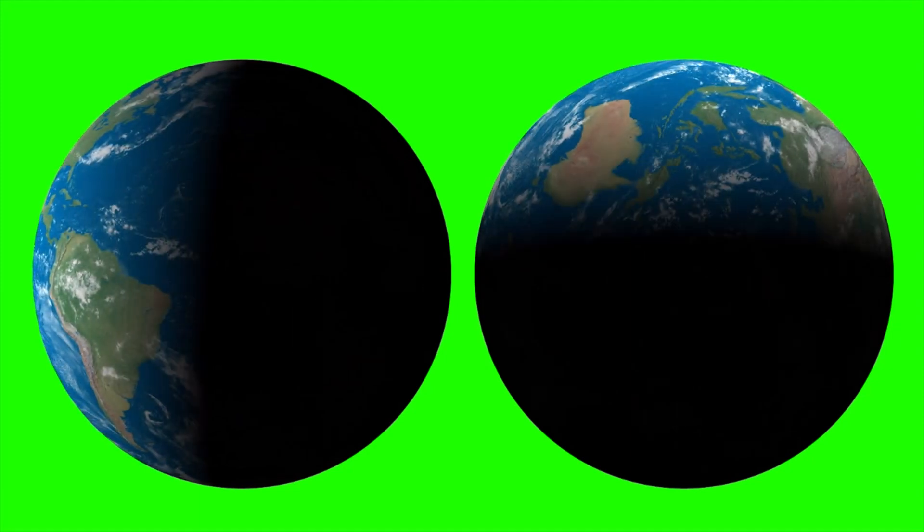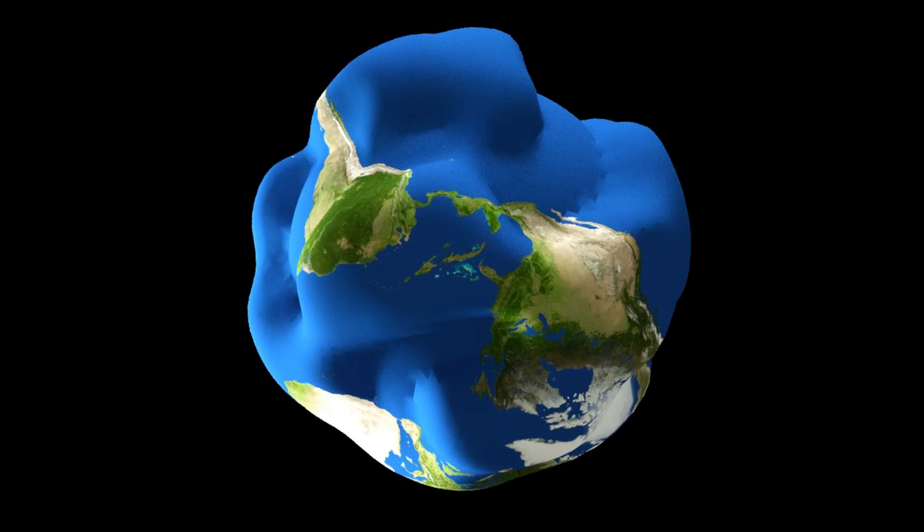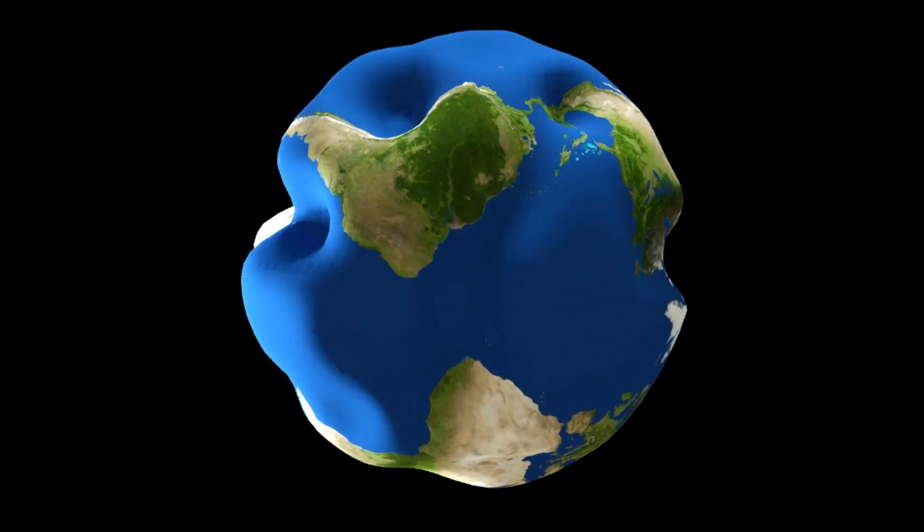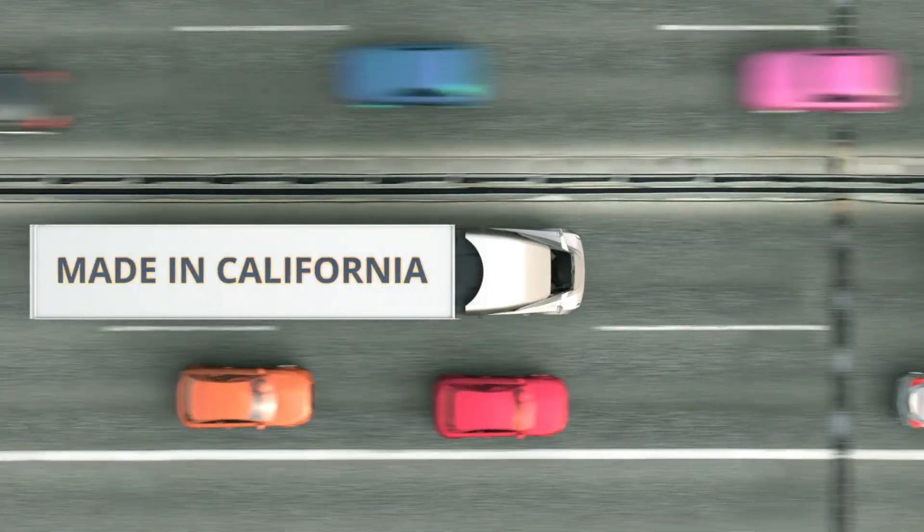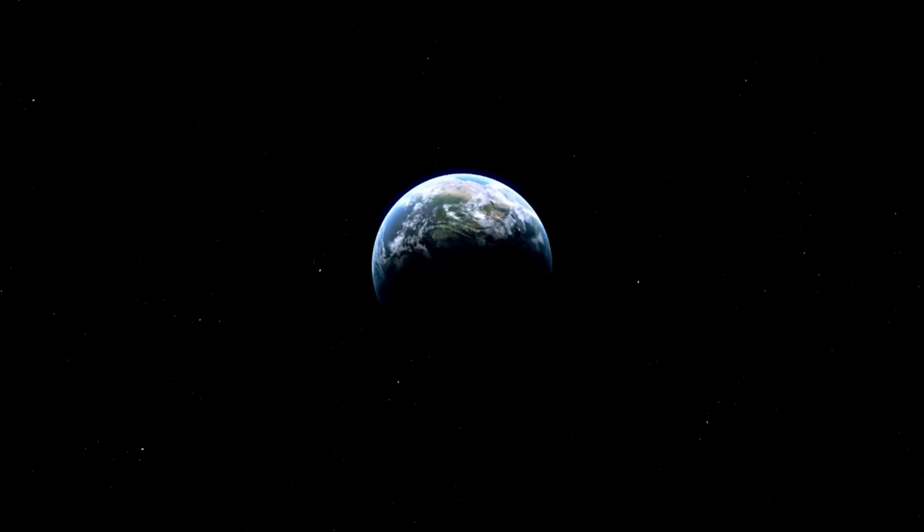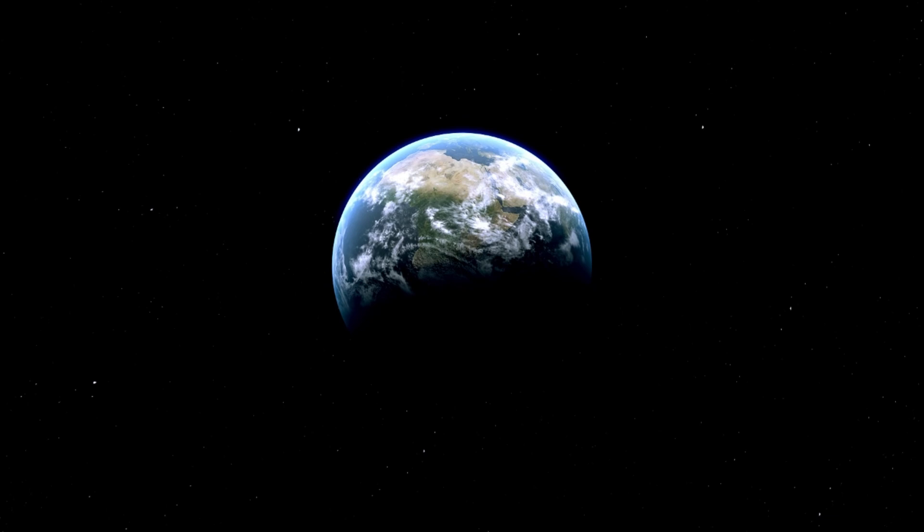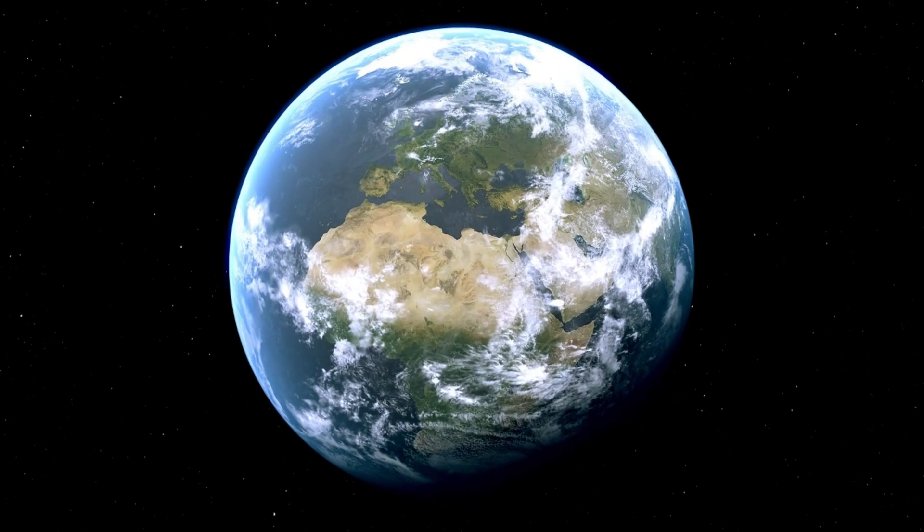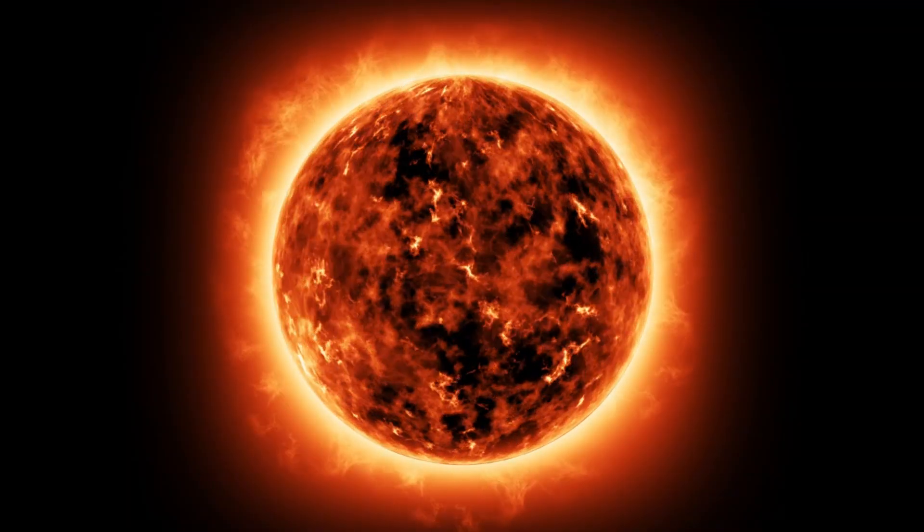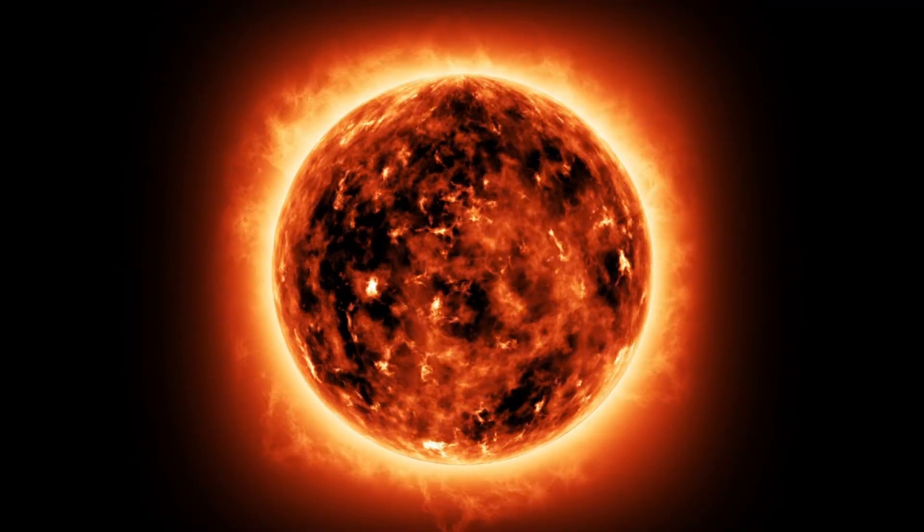Imagine what would happen to us and our planet if Earth suddenly became as big as the Sun. To grasp the scale of this, consider that the diameter of Earth is approximately 8,000 miles. That's like driving back and forth across the United States three times. Now, let's think bigger, much bigger.